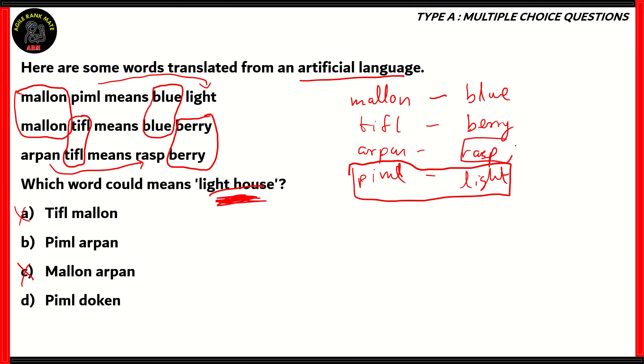Now if you look at the word arpen, arpen actually means rasp. So therefore pimple arpen would mean rasp light, which is wrong because we need lighthouse. So option B is incorrect. Option D, pimple doken, would actually mean lighthouse. Since pimple means light, you can find out that doken means house. Therefore pimple doken is the word that could mean lighthouse in that artificial language. Option D turns out to be the right option.